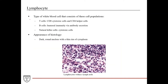Lymphocytes are definitely a type of cell you'll see in connective tissue sections. We'll give a superficial overview here, with much more detail in the hematology and blood lectures. Lymphocytes are a type of white blood cell. There are three cell populations: T cells, B cells, and natural killer cells. Immunology is an incredibly complex subject, so we'll just give a very basic overview of each.